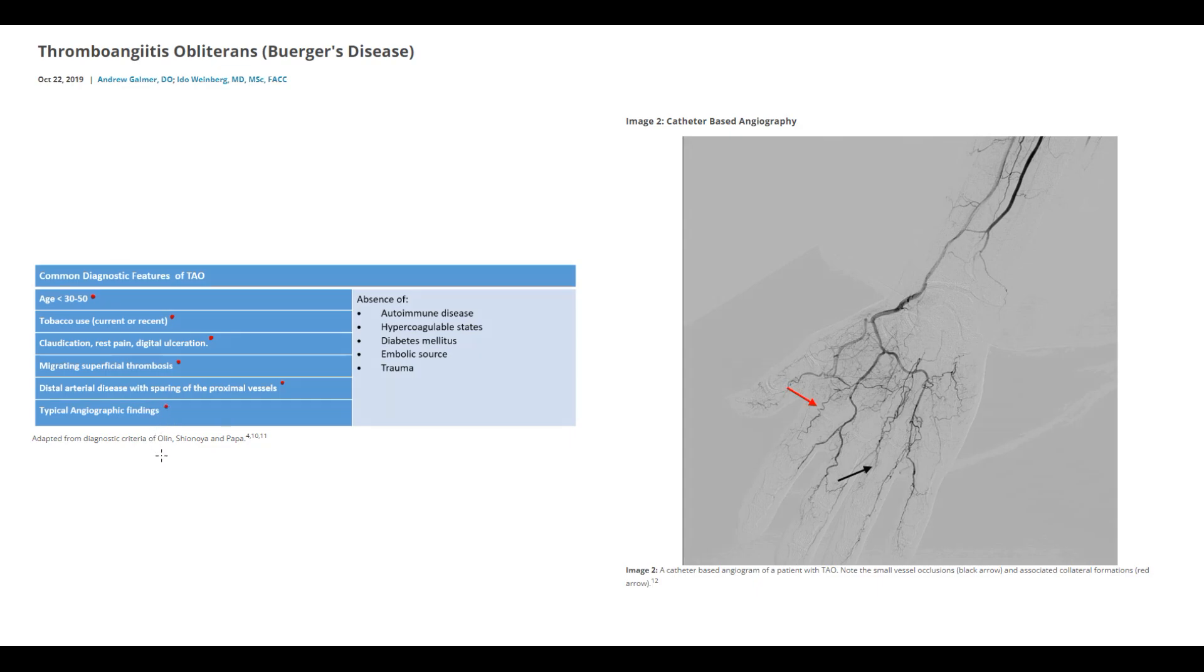On the right image, we can see that thrombosis causes obstruction to the blood flow, because we do not see the small artery that should supply finger tissue.